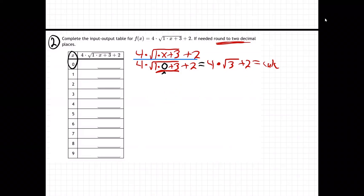So just hit the buttons on your calculator and get that answer: 4 times the square root of 3, plus 2, like that. And then for the next one, now we're going to plug in 1. So we're going to go again. It's going to be 4 times the square root of 1 times x plus 3 with the plus 2 at the back. And next, we're plugging in a 1, because x is 1, right? These are the x values over here on the left side.